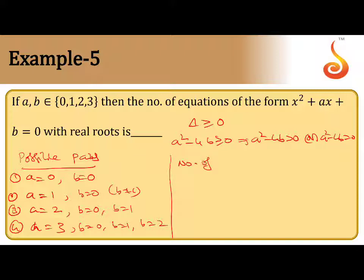So now number of required equations, number of quadratic equations with real roots, is equal to number of pairs (a, b) satisfying discriminant greater or equal to 0. That is, number of pairs (a, b) satisfying a² - 4b greater or equal to 0.